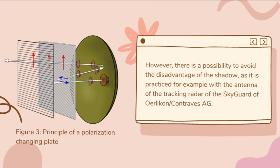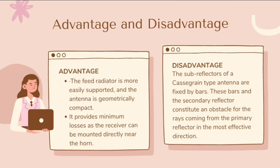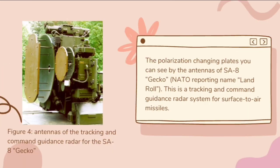The secondary reflector reflects only horizontally polarized waves. Thus, the primary reflector with its metallic surface reflects all electromagnetic waves. A special feature, however, is that when a circularly polarized wave is reflected, it has a reverse direction of rotation after reflection. The polarization plates can be seen in the antennas of the SA-8 Gecko, which is a tracking and command guidance radar system for surface-to-air missiles.